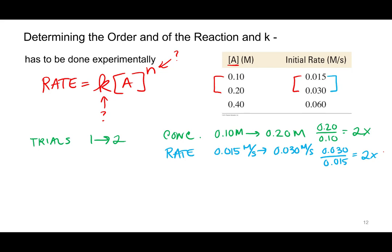Mathematically: rate equals the rate constant times concentration. I doubled the concentration, so I have two raised to some power n equals two — so two raised to the first power equals two, meaning n equals one. This is a first-order reactant. The rate law would be written as: rate equals k times the concentration of A.